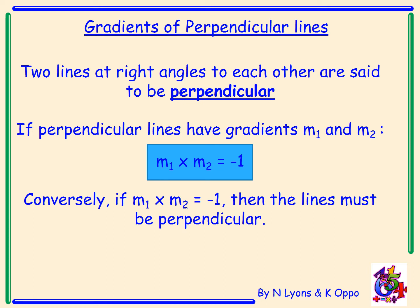So the gradient of perpendicular lines. Two lines at right angles to each other are said to be perpendicular. If perpendicular lines have gradients m1 and m2 then m1 times m2 must equal minus one. Conversely if m1 times m2 does equal minus one then the lines must be perpendicular.